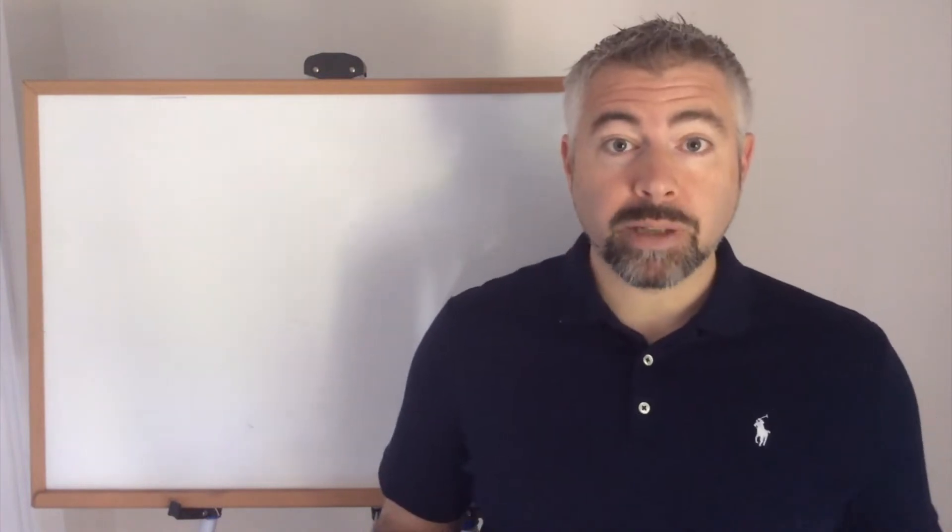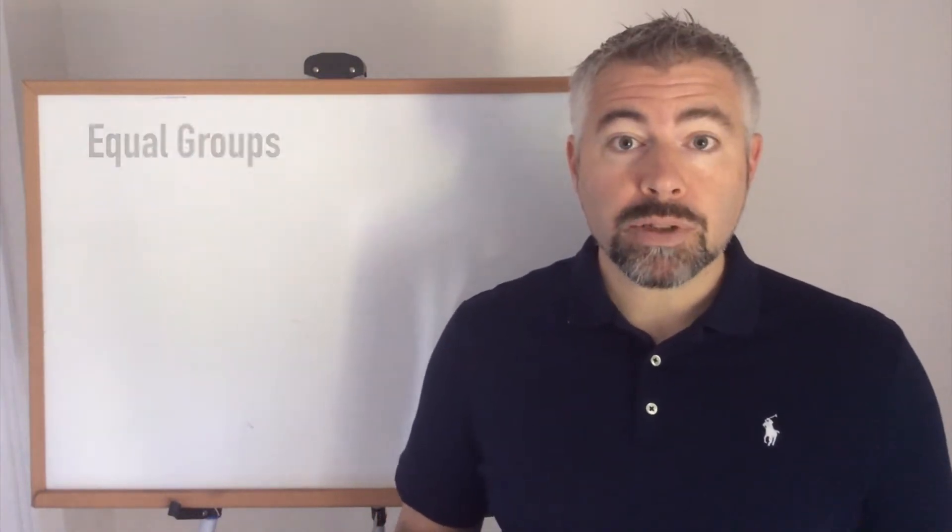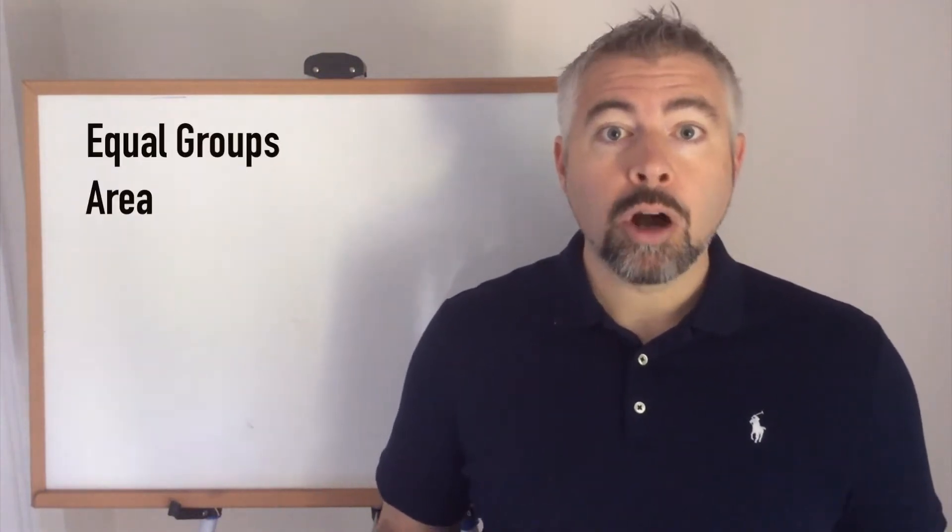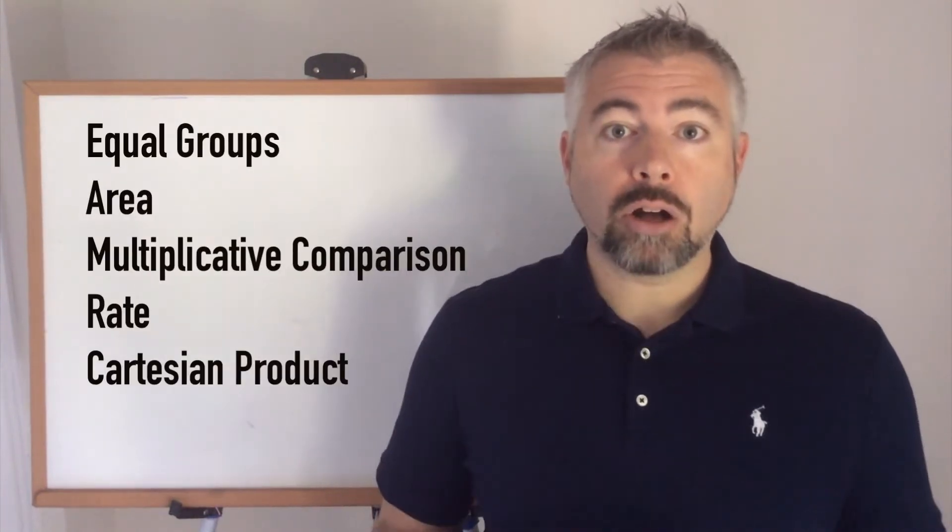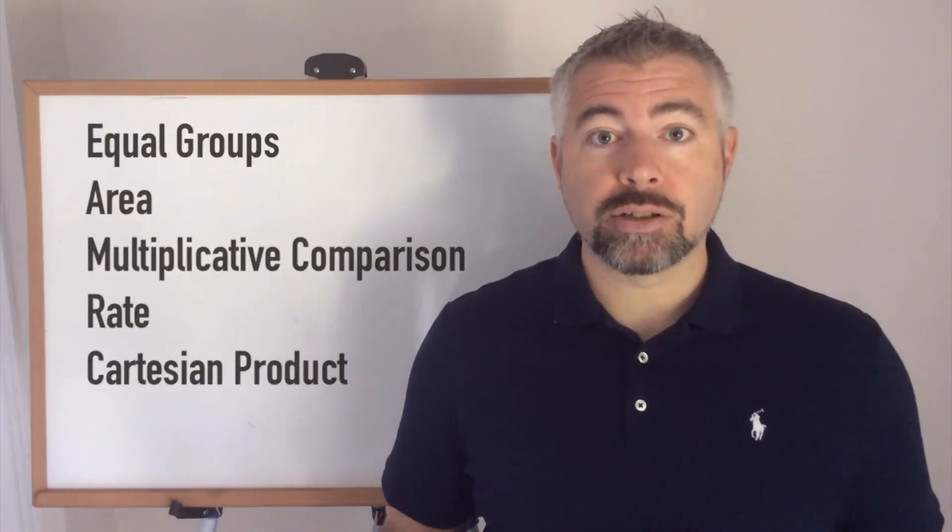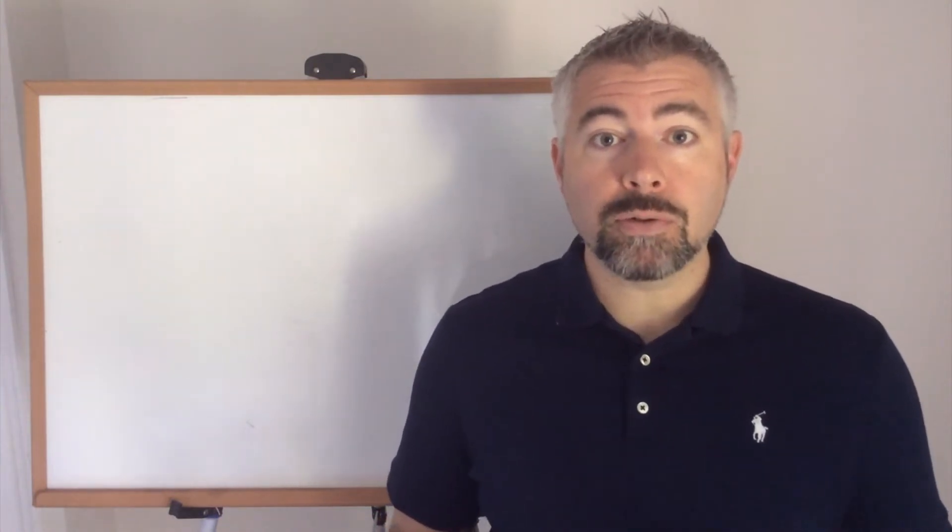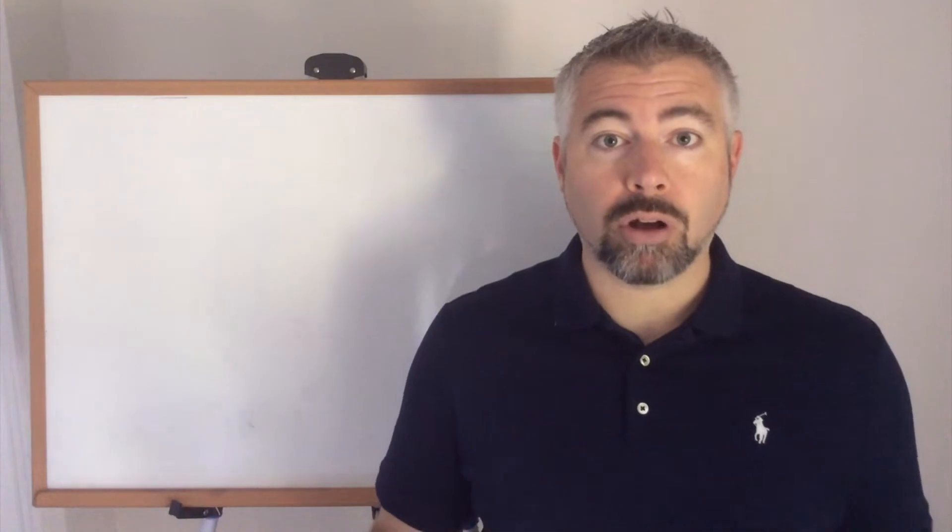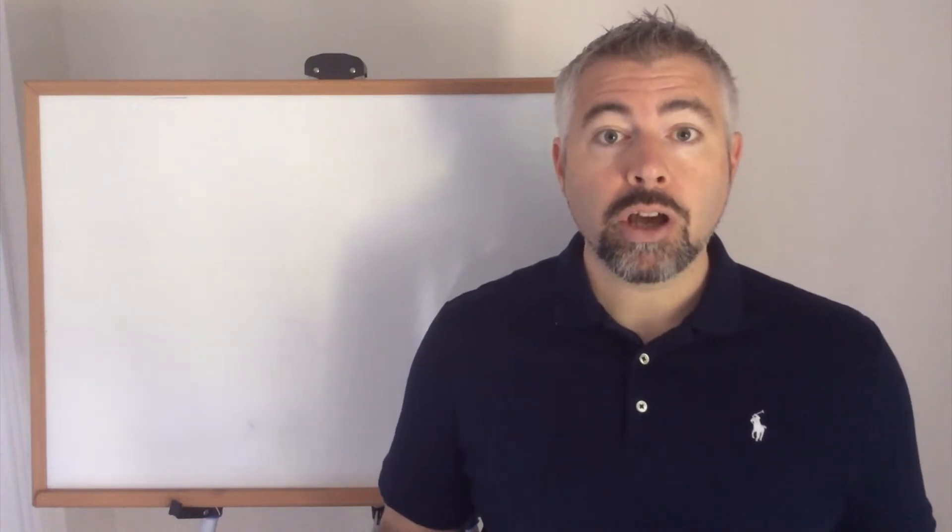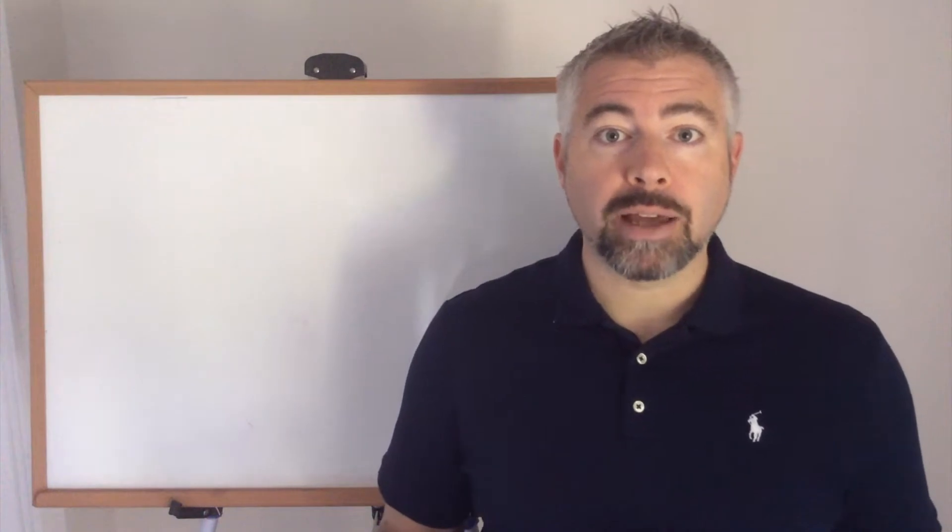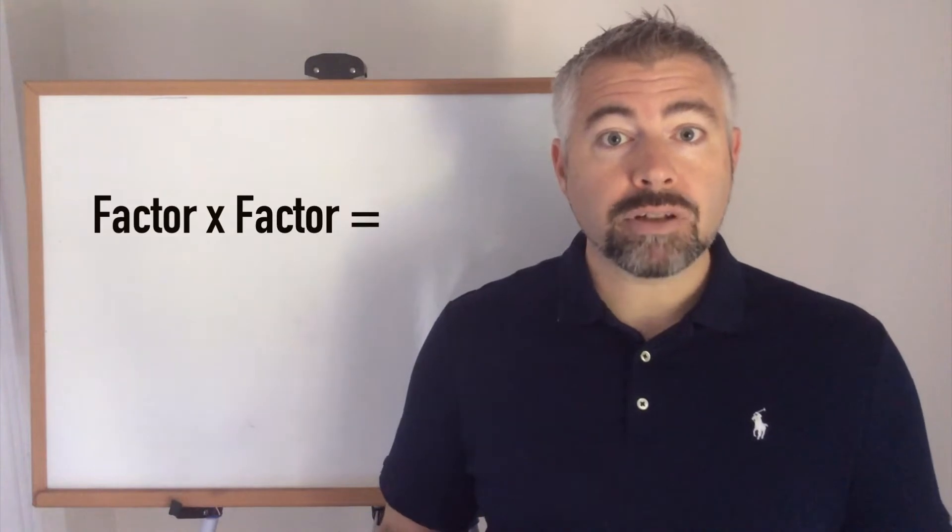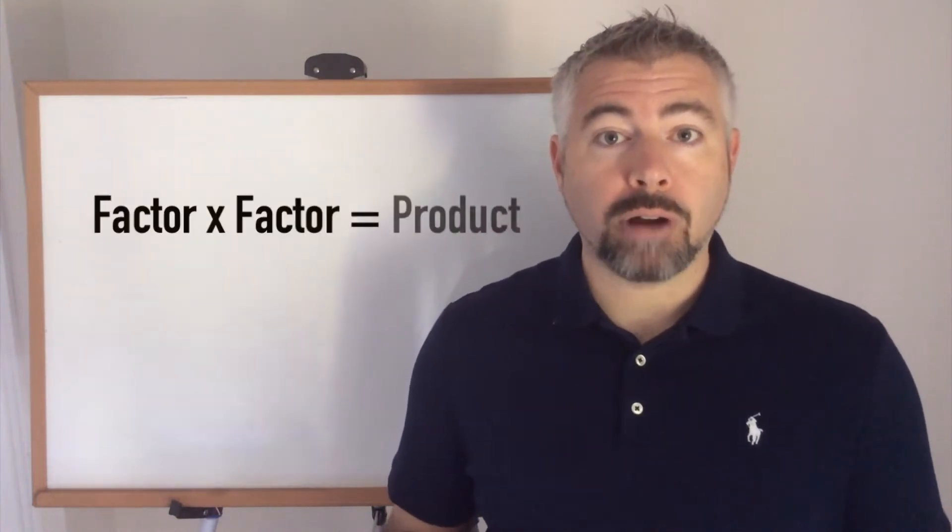The five meanings of multiplication are equal groups, area, multiplicative comparison, rate, and Cartesian product. I'll go into detail on each in just a minute. But first, here are two things to keep in mind. First, the vocabulary: when we multiply, the two numbers being multiplied are called factors, and the result is called the product.